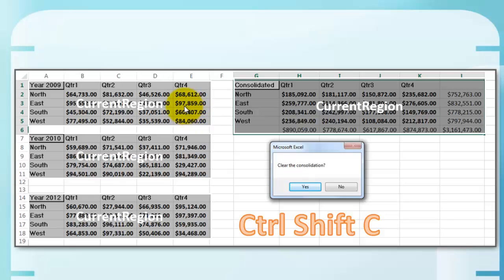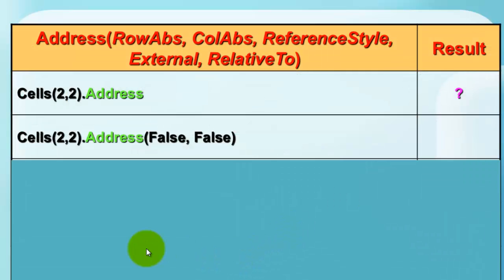The current region has a big advantage in VBA because it knows exactly how many rows we have here, five, and how many columns, five. How many rows, six. How many columns, six. Thanks to the current region we can do miracles.